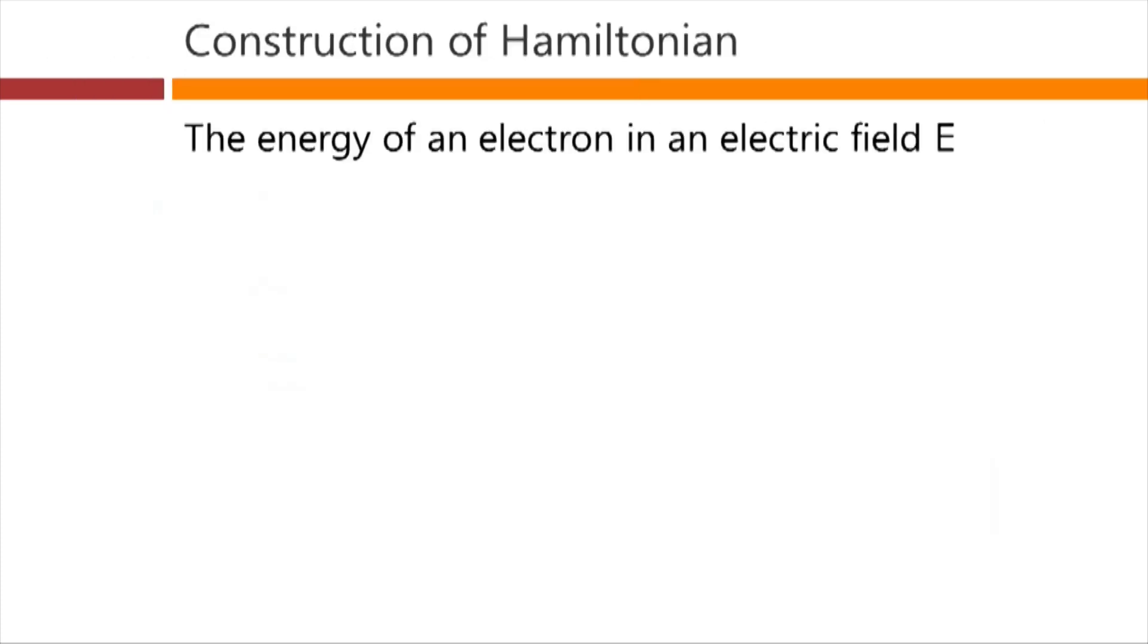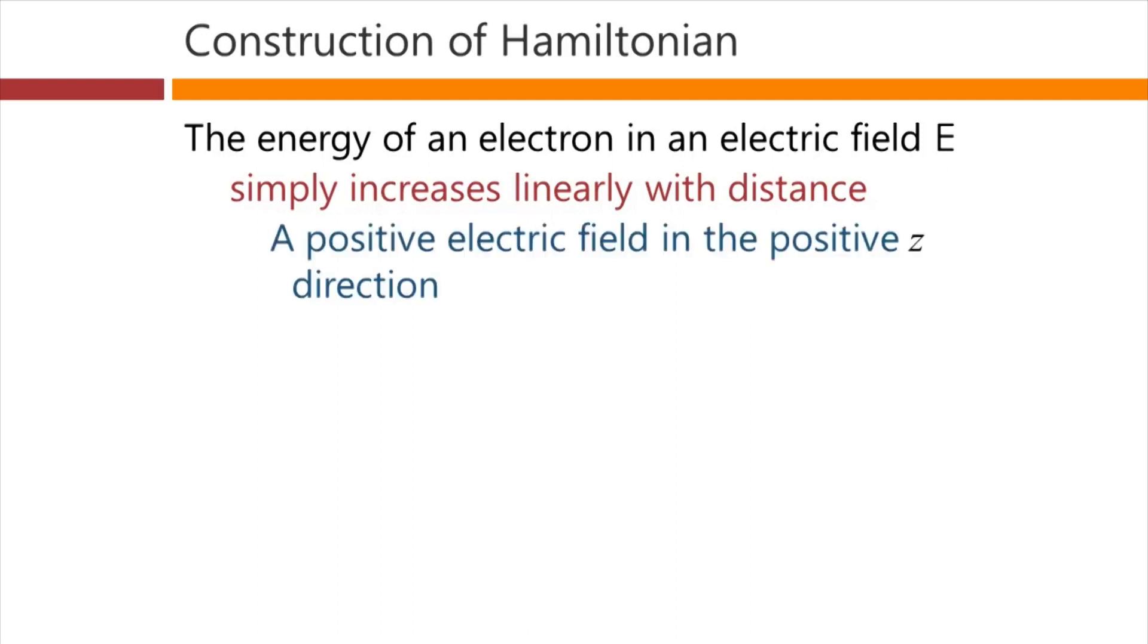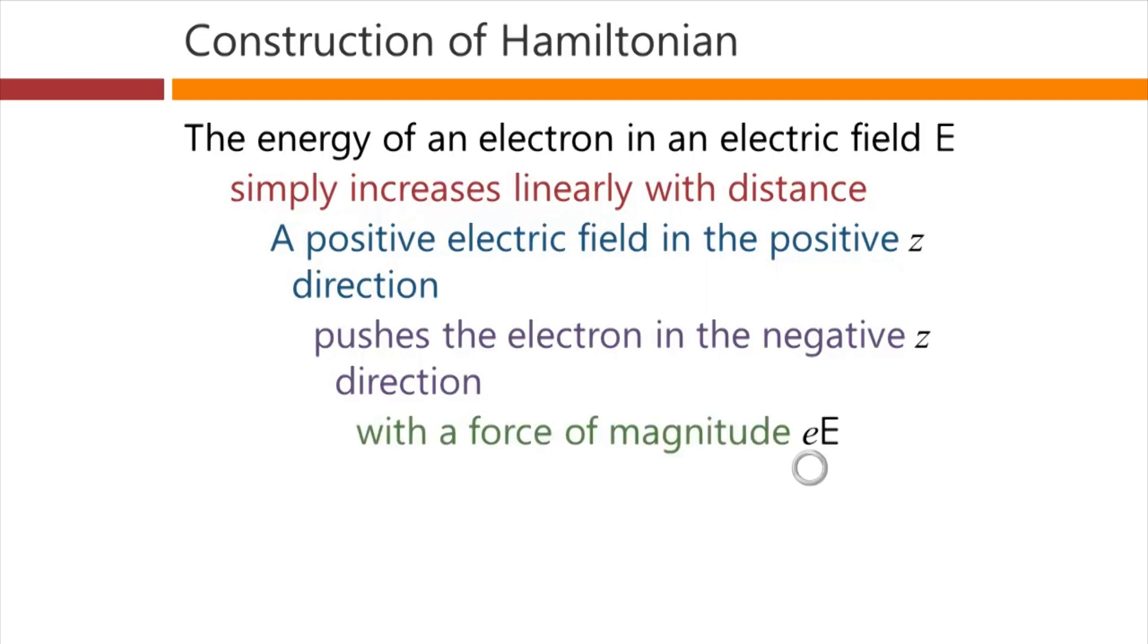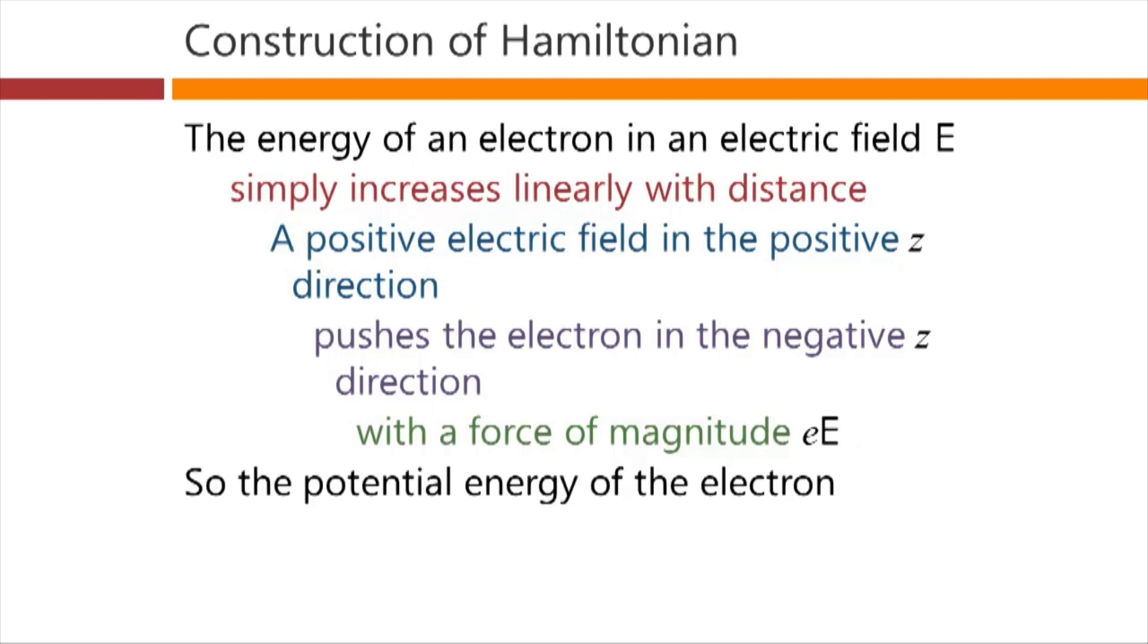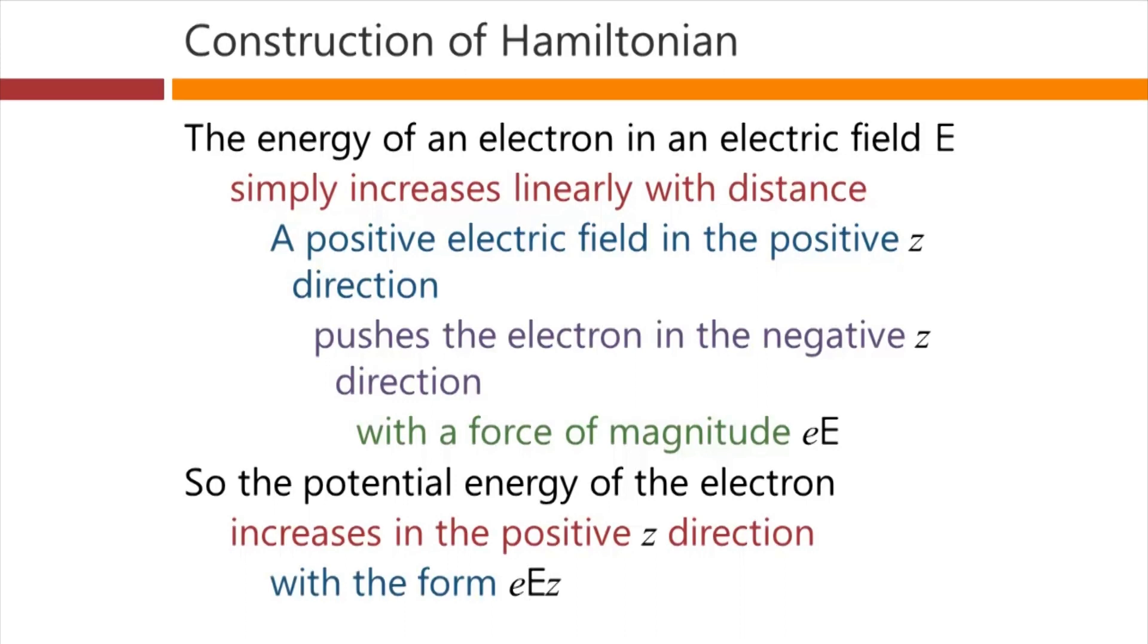So formally, the energy of an electron in an electric field capital E simply increases linearly with distance. A positive electric field in the positive z direction pushes the electron in the negative z direction with a force of magnitude, the electronic charge, times the magnitude of the field. So the potential energy of an electron in a field pointing in the positive z direction is one that increases in the positive z direction because the force is trying to push it in the other direction. And the form of this potential energy as a function of position z is the electronic charge times the field, that's the force, times the distance, that's z.